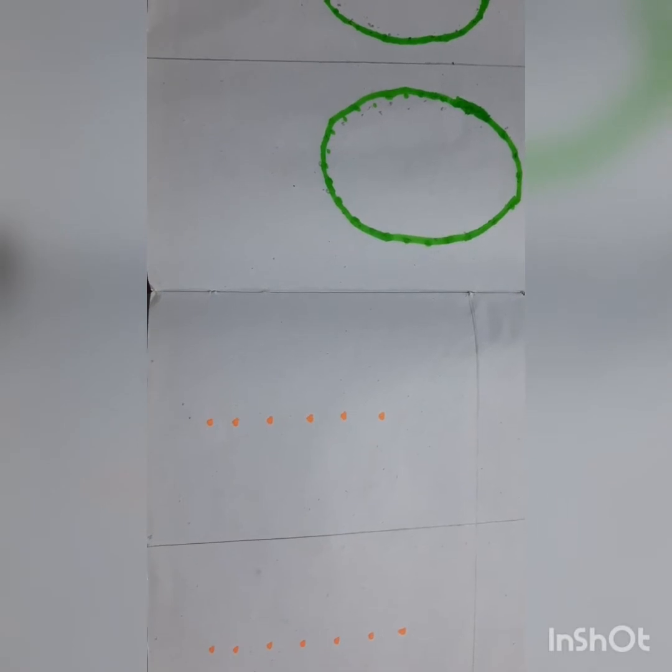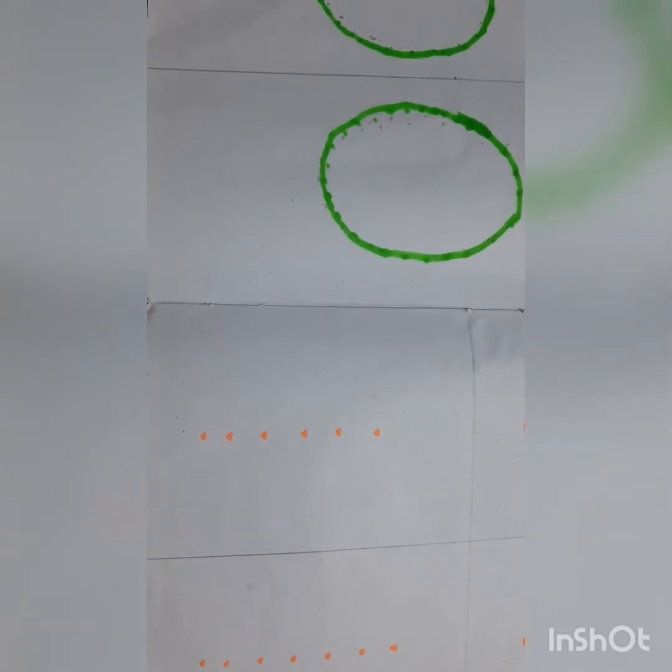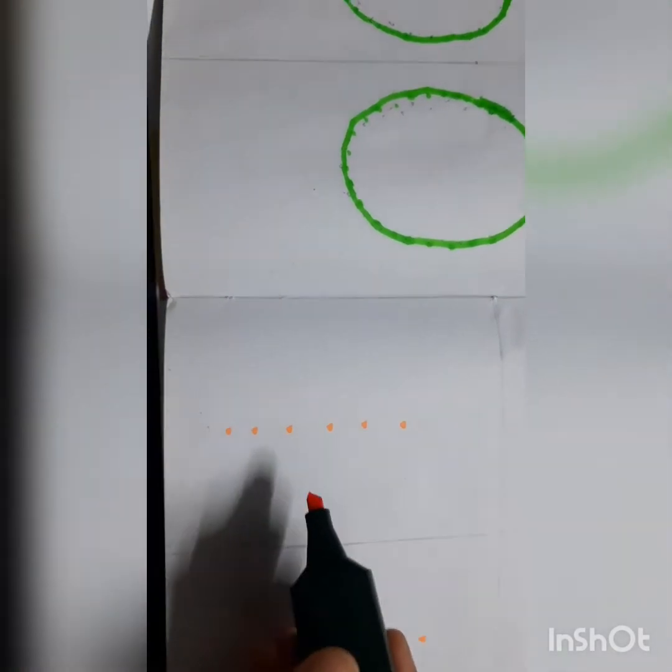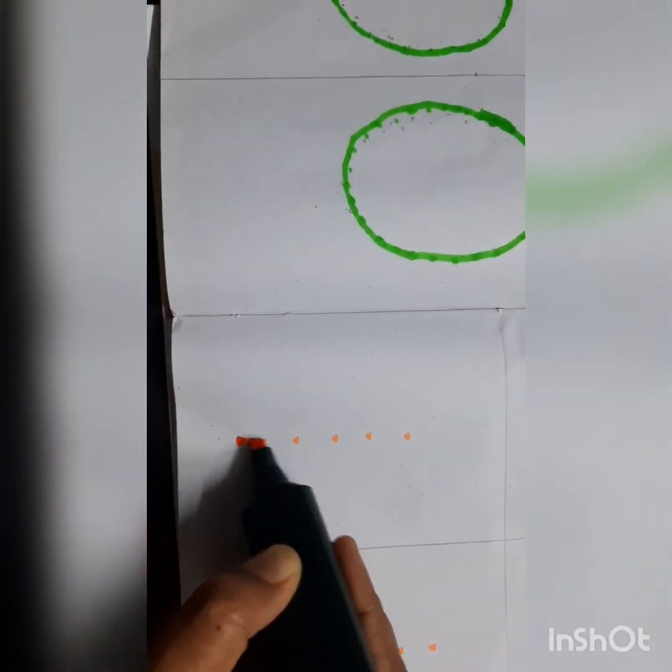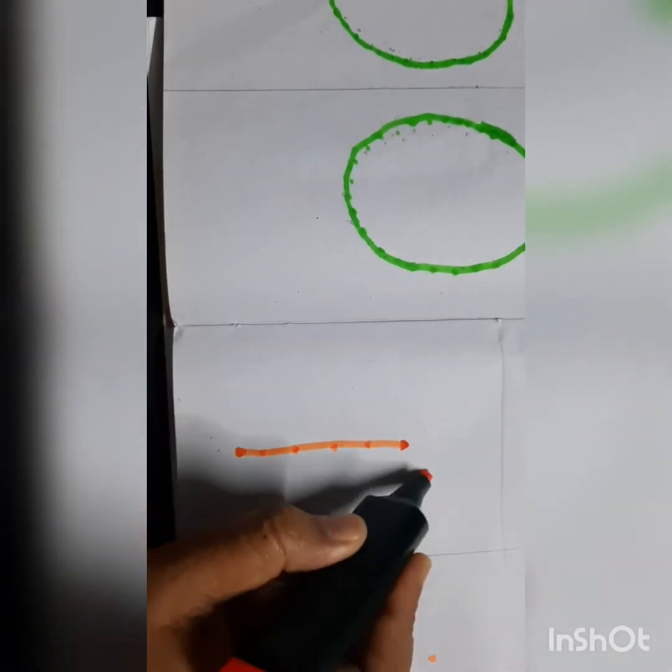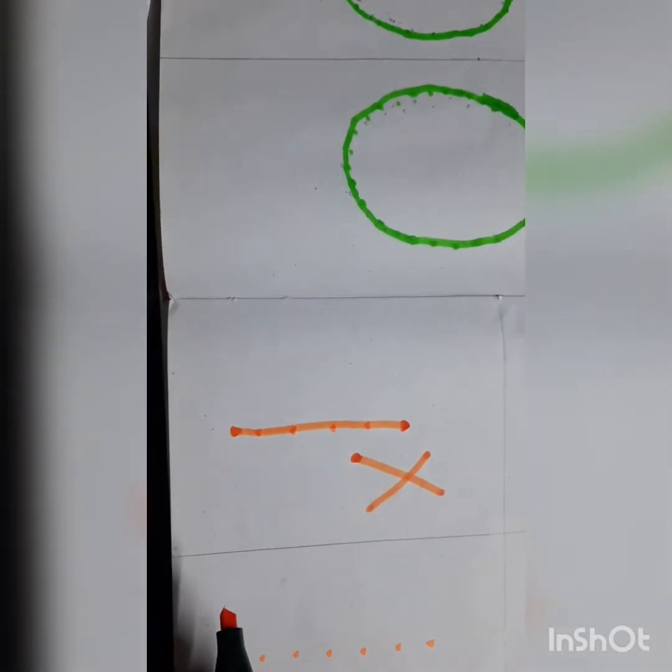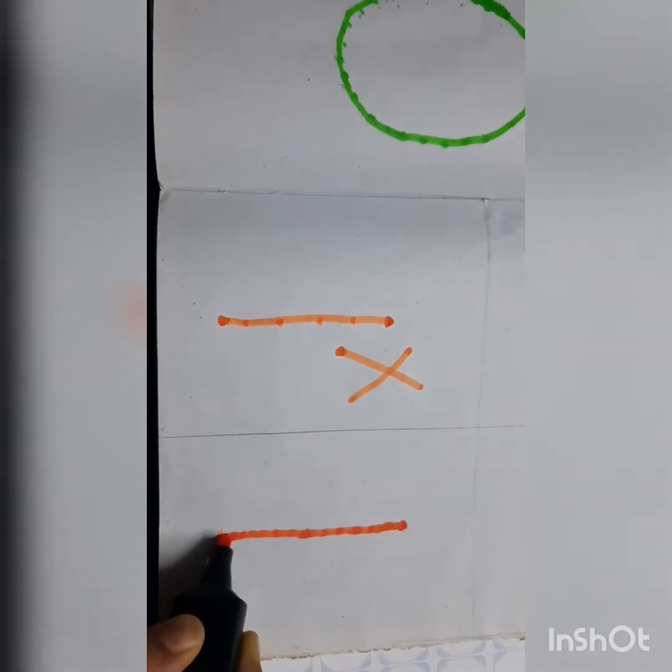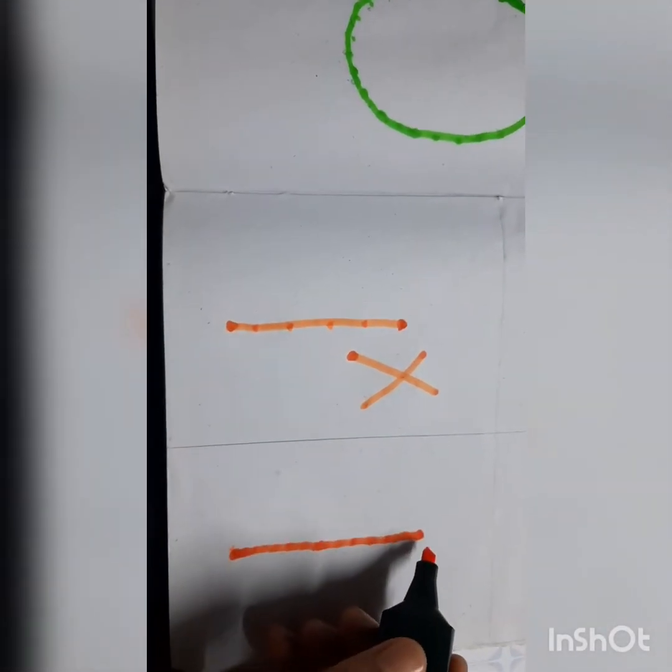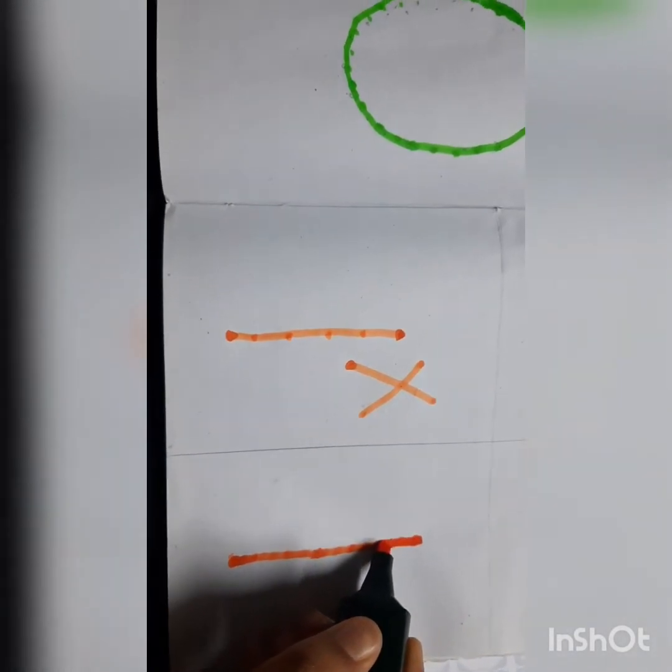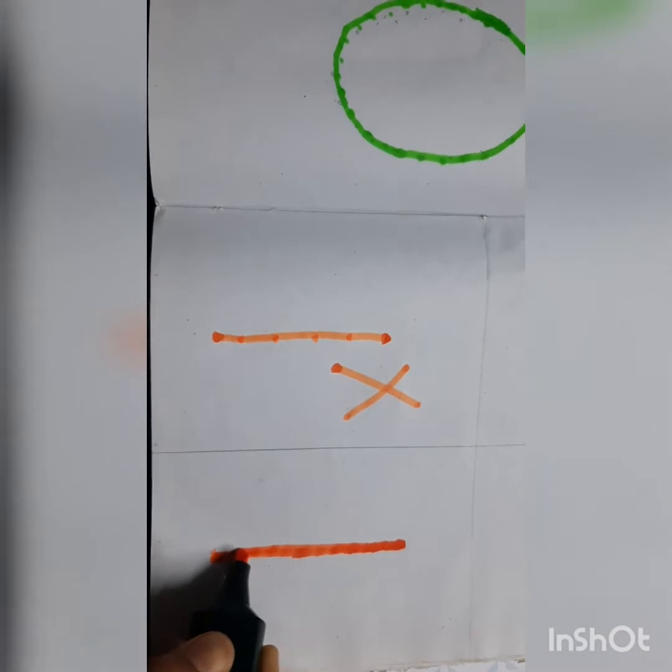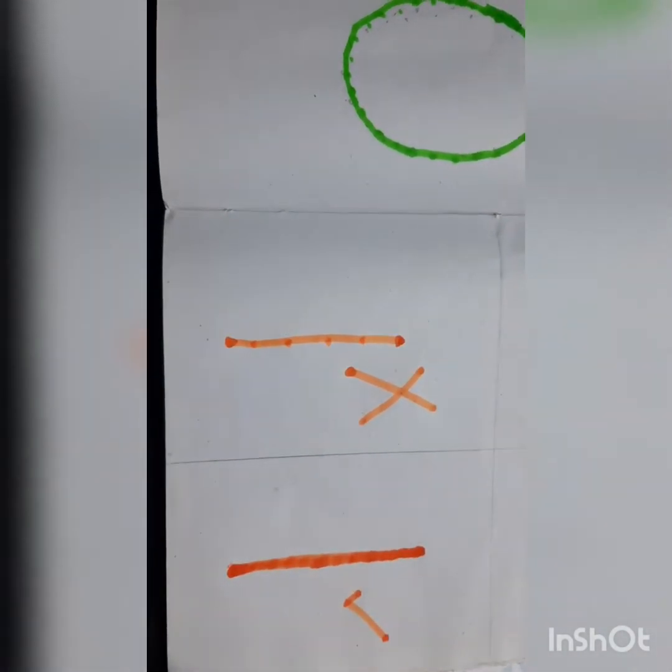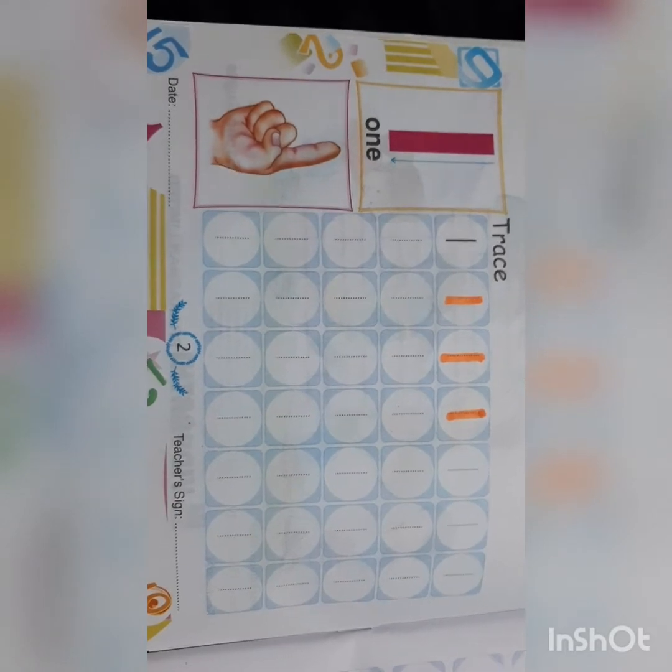Dear children, you never should write number one from down to up. This is wrong. You're always supposed to write from this side to this side. You should trace or write number one from up to down. This is correct.